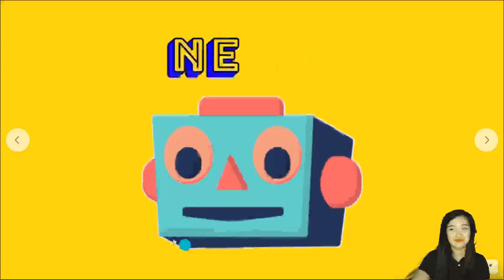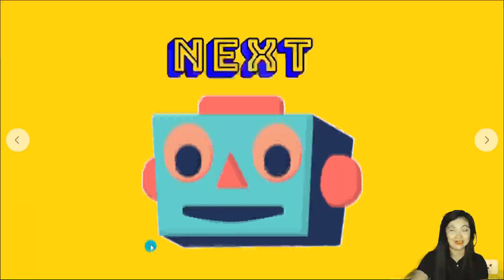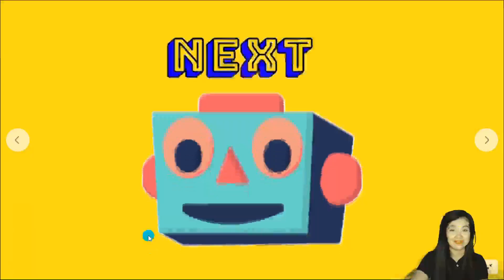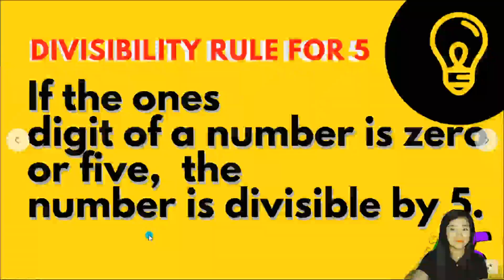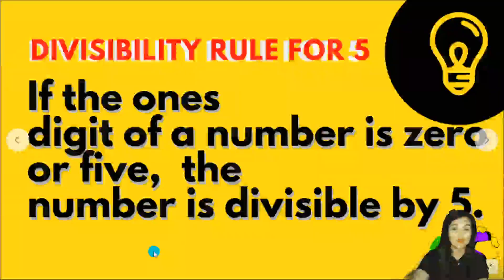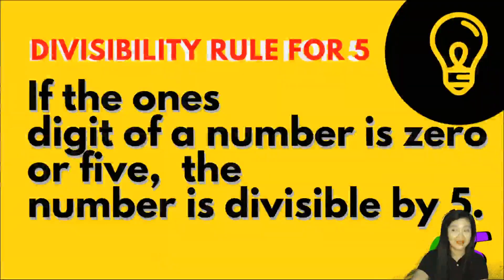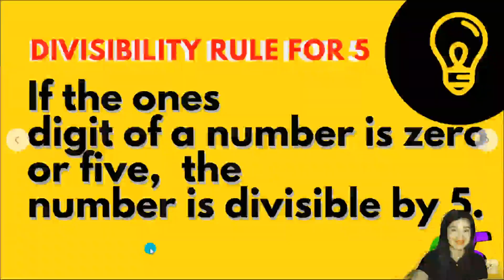Let's move on with another divisibility rule, which is the divisibility rule for 5. If the 1's digit of a number is 0 or 5, the number is divisible by 5. Let's have some examples.